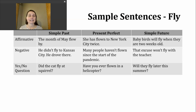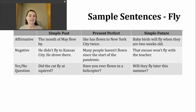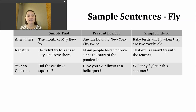To make a negative sentence in the simple future, use will not and then the base verb. Native speakers often use the contraction won't. Here's an example: That excuse won't fly with the teacher. This uses the fourth informal definition from the beginning — it means that excuse won't be acceptable to the teacher. For a yes or no question in the simple future, start with will, then the subject, then the base verb. For example: Will they fly later this summer?